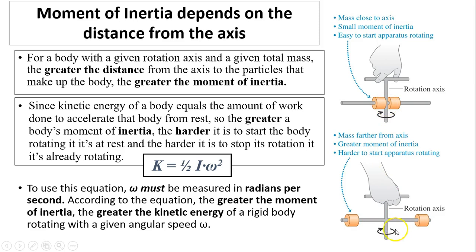The bottom, you'll have a larger moment of inertia. As a result, it's very easy to start the apparatus rotating on top. On the bottom, it is harder to start it rotating. For a body with a given rotation axis and given total mass, the greater the distance from the axis to the particles that make up the body, the greater the moment of inertia.